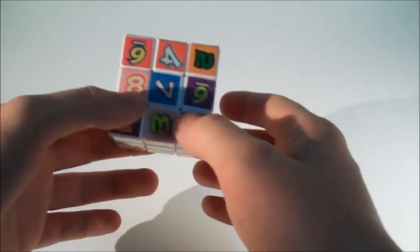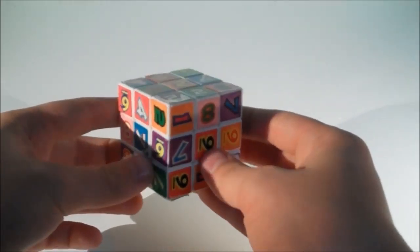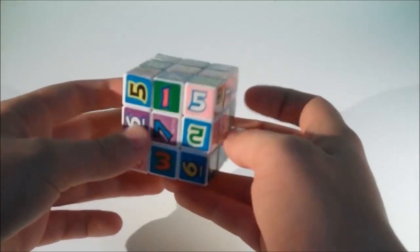Each piece has either 1, 2 or 3 numbers, which are mostly all facing different ways. So how are we going to solve this?